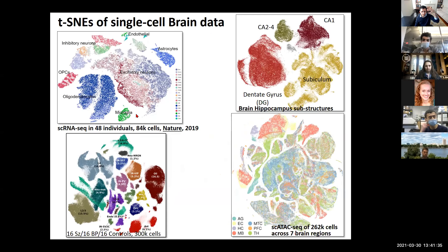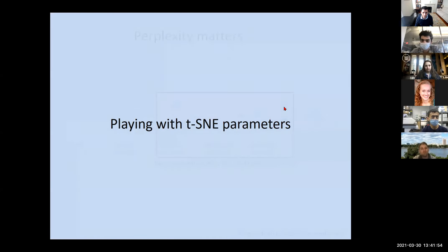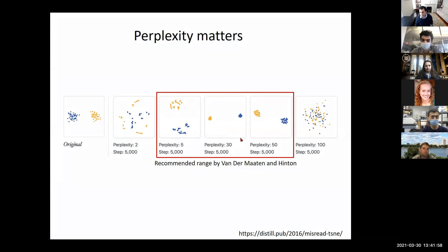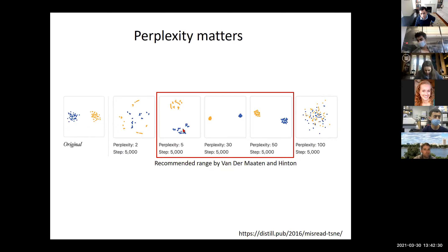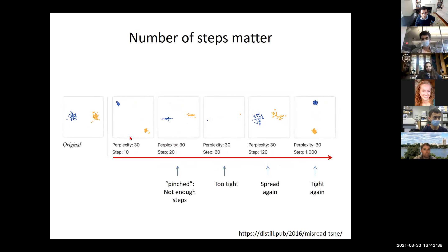t-SNE is the workhorse of many visualizations surrounding single cell datasets. As you think about single cell data for your projects, you will be using t-SNE or UMAP or other stochastic embeddings into a lower dimensional space. There are many parameters that matter in these embeddings. If you only consider two neighbors, you don't capture the original structure at all. If you consider too many neighbors, like 100, you lose information as well. Considering five, 30, or 50 neighbors captures those local structures well.